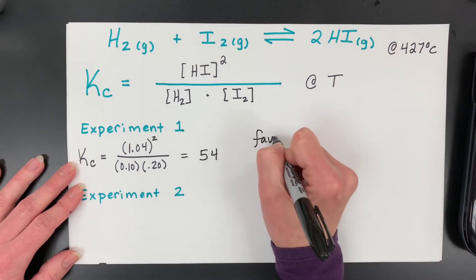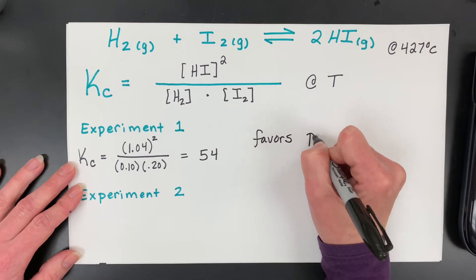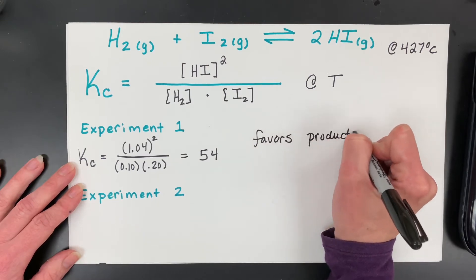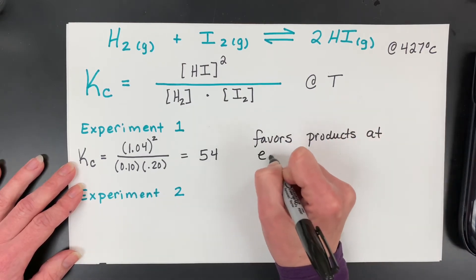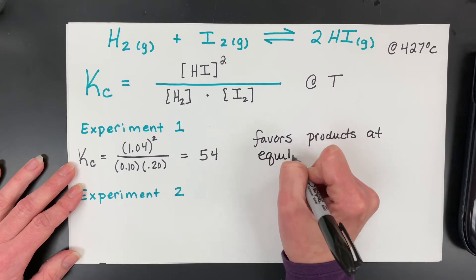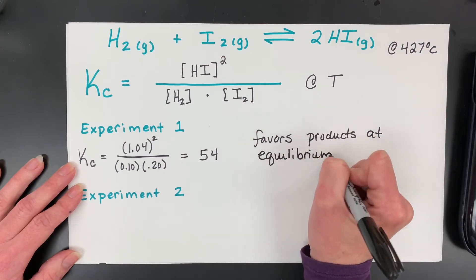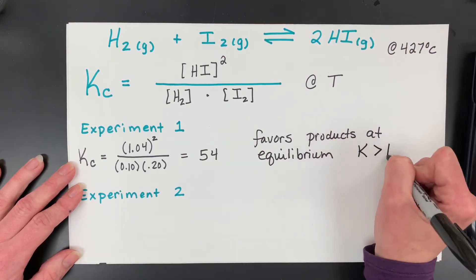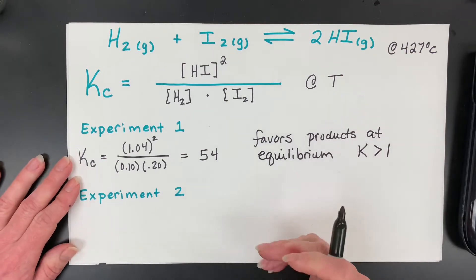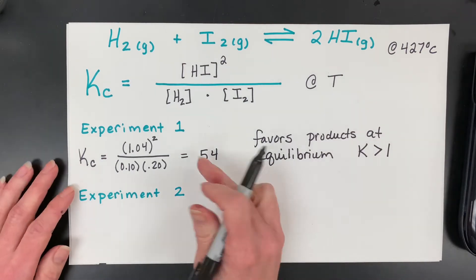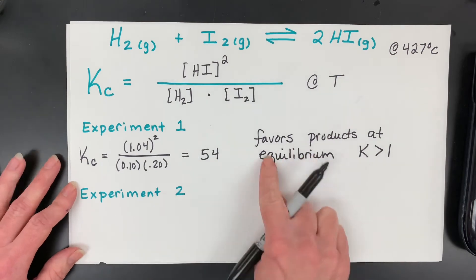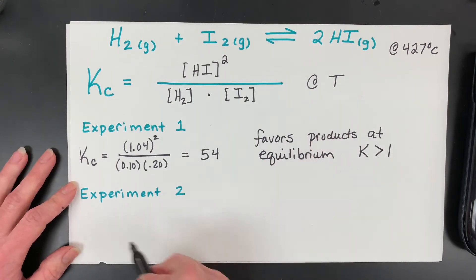So what this means is people would say that this favors products at equilibrium. And why I'm saying that is because the K value is greater than 1. So my products are more prevalent concentration-wise overall, and especially because of the square part too, but the products are favored at equilibrium.